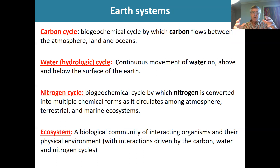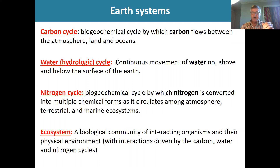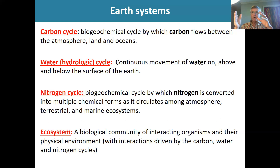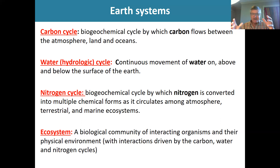We've got the water cycle, driven by gravity but also by solar energy, which is the cause of evaporation. Plants grow and transpire, so water moves from the soil or from a water body through plants, or directly evaporates up into the atmosphere, and then it comes down. Water may percolate through the soil into groundwater and then ultimately into the ocean. We know about that from grade seven science.